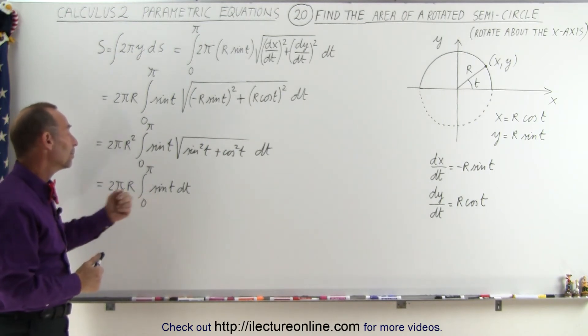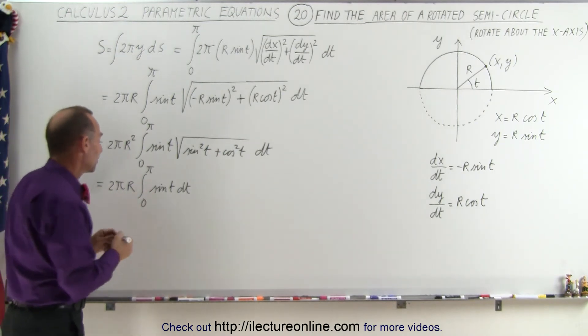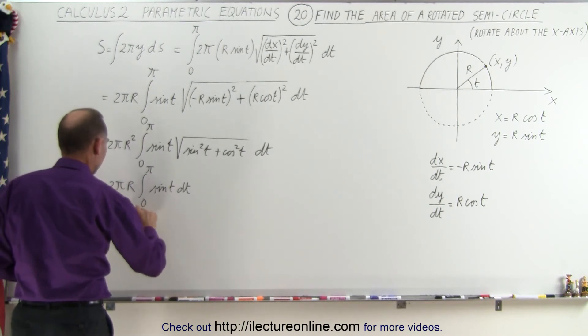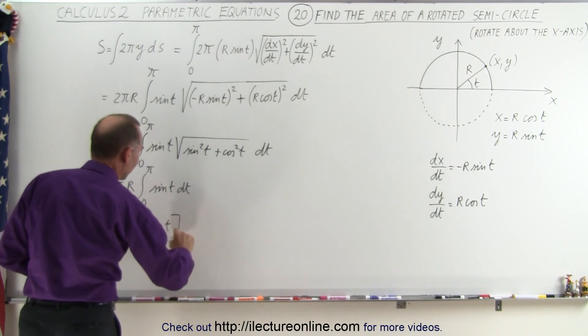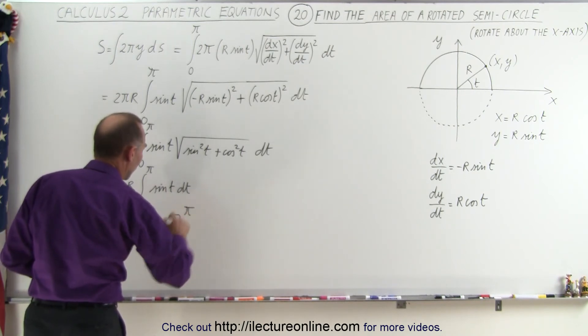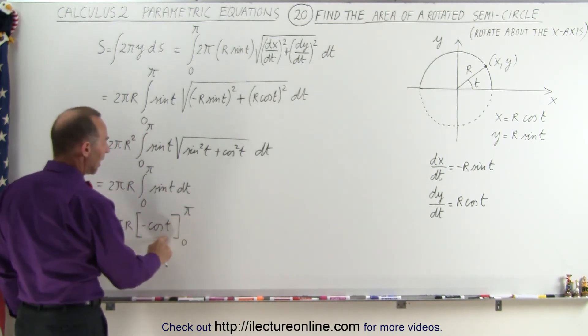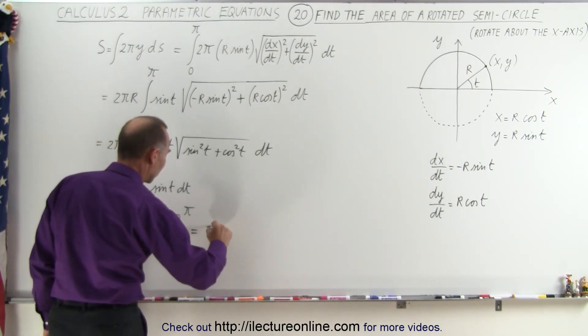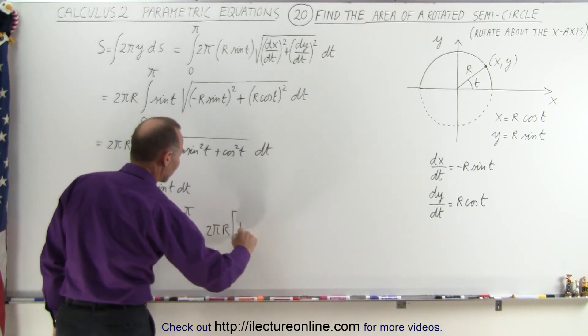The integral of the sine would be the negative cosine. So this becomes equal to 2πr² times the negative cosine of t evaluated from 0 to π. When we plug in π, the cosine of π is negative 1 but times the negative 1 makes that a positive 1. So this is equal to 2πr² times a positive 1 minus